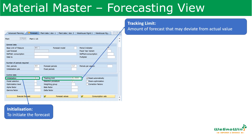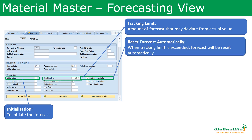Then we have the tracking limit. The tracking limit field holds a value that specifies the amount by which the forecast value may deviate from the actual value. This figure can be entered to three decimal places. Then the reset forecast automatically indicator — if we select this field, the system will reset if the tracking limit is exceeded. If the system calculates values with the tracking limit more than that threshold, then the system will reset it.